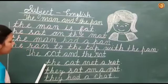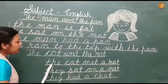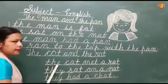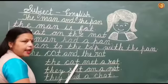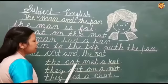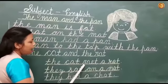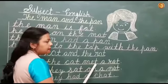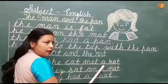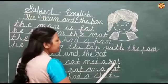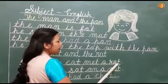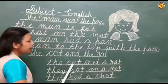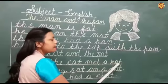Now I am going to read from here. T-H-E, the. C-A-T, cat. C-A-T, cat. M-E-T, met. M-E-T, met. A, a. R-A-T, rat. R-A-T, rat. Full stop. The cat met a rat.